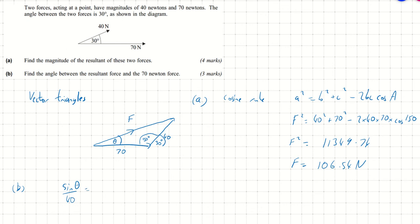The sine rule says that sine theta over the side opposite theta, which is 40, is equal to sine 150 over the side that's opposite. Well, opposite 150 is this F, 106.54.